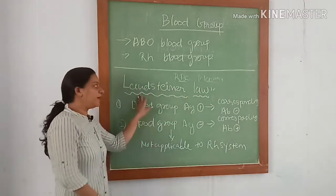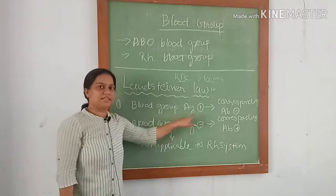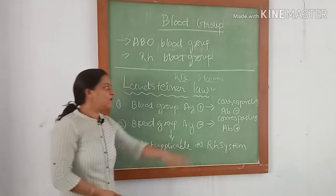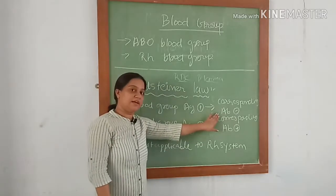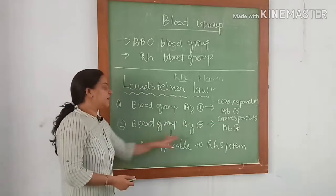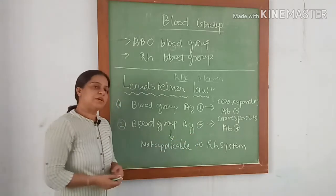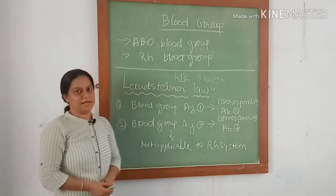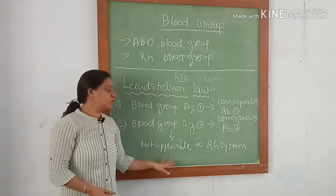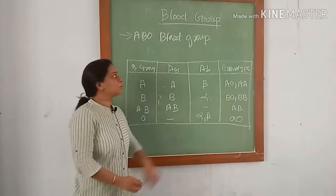According to Landsteiner's law, when a blood group antigen is present on the cell membrane of the red blood cell, the corresponding antibody must be absent in plasma. If the blood group antigen is absent, then the corresponding antibody must be present in plasma. The second part of Landsteiner's law is not applicable to the RH blood group system.